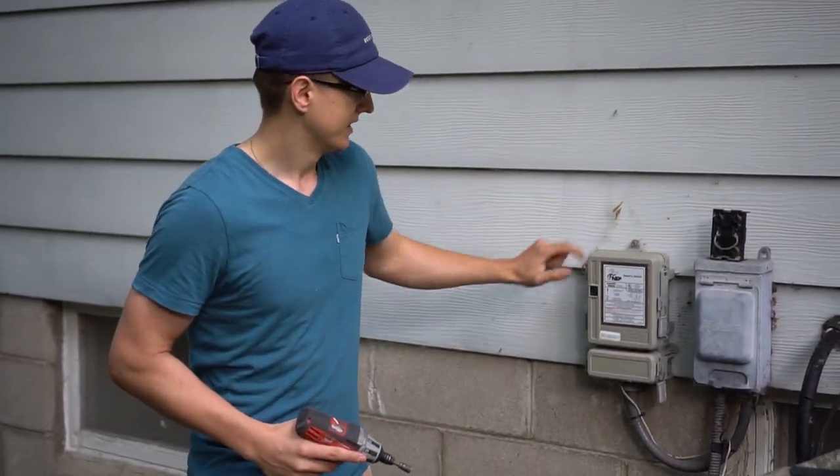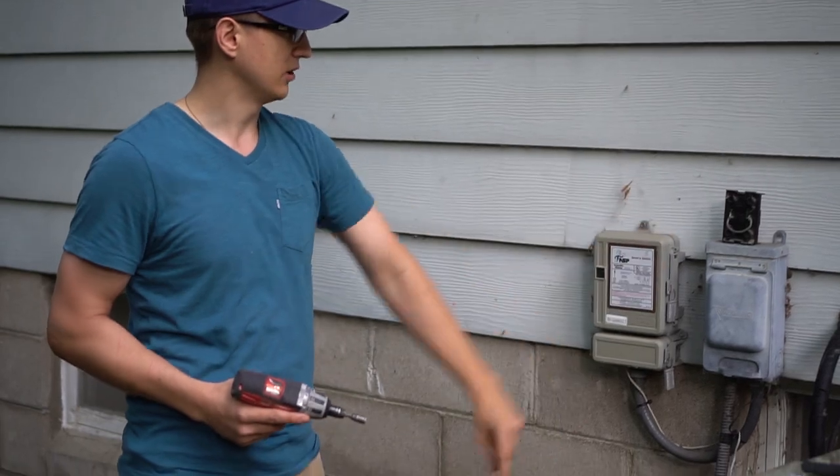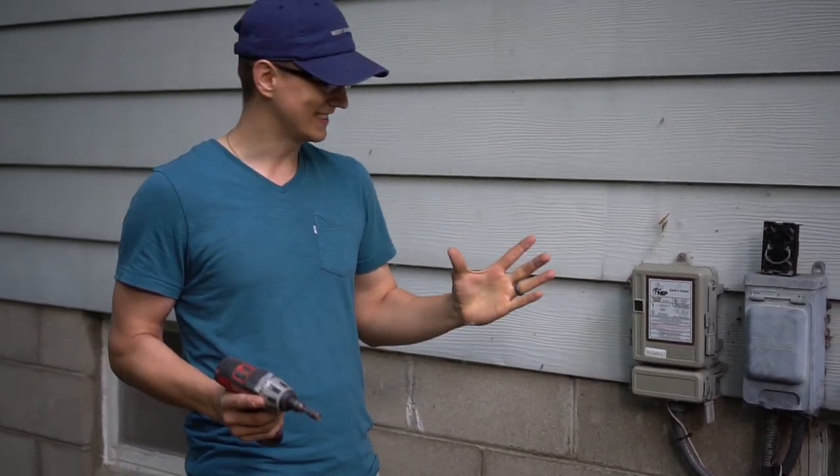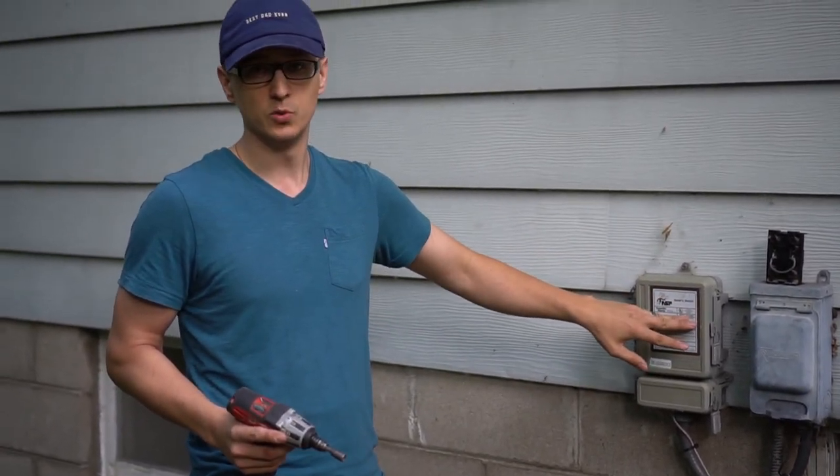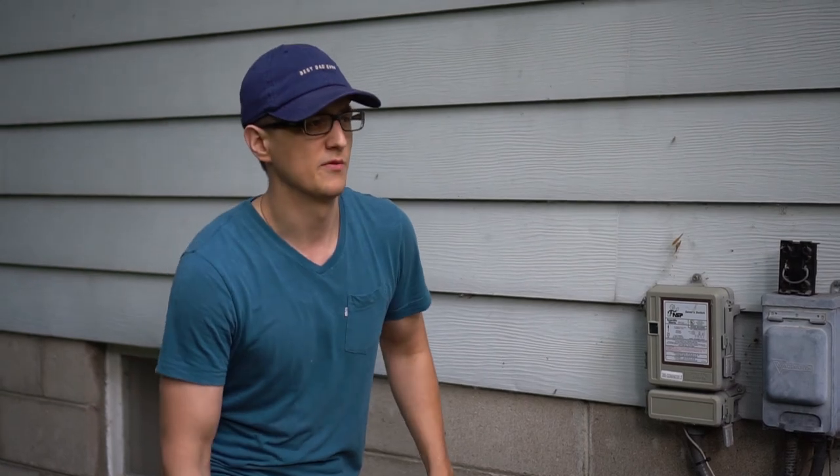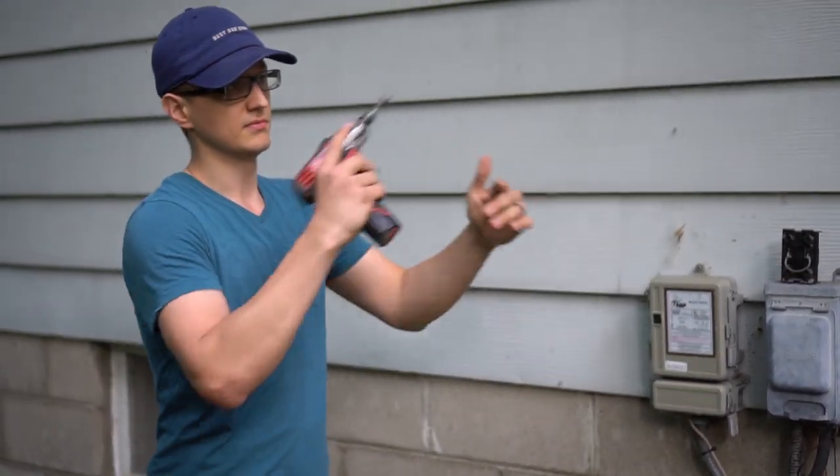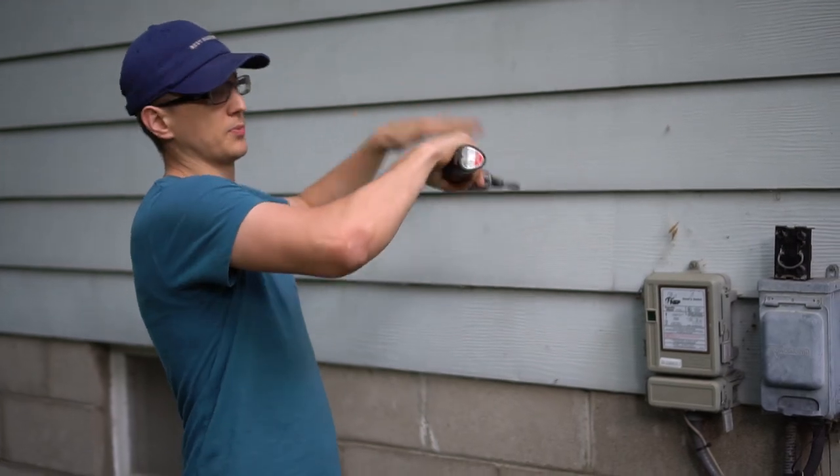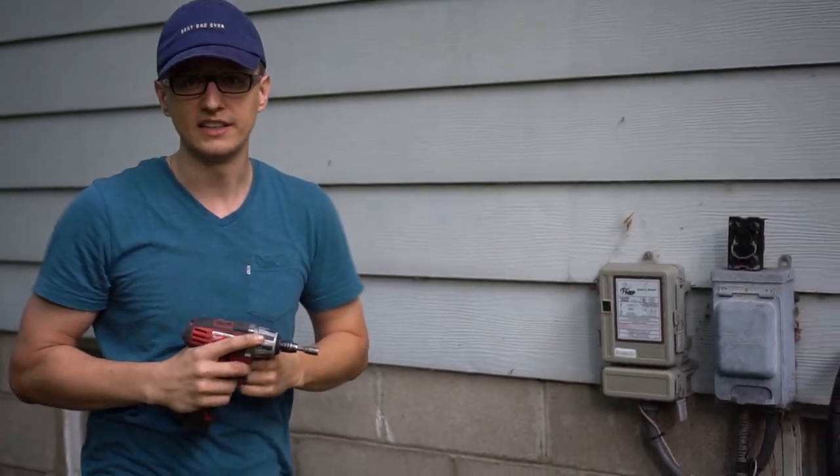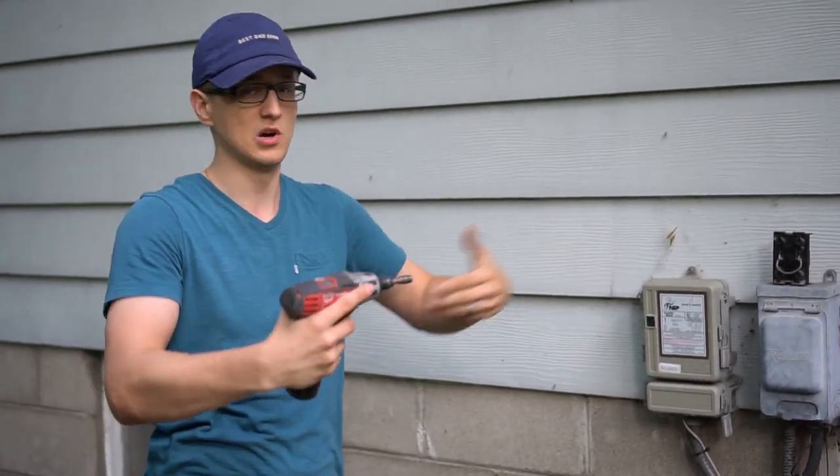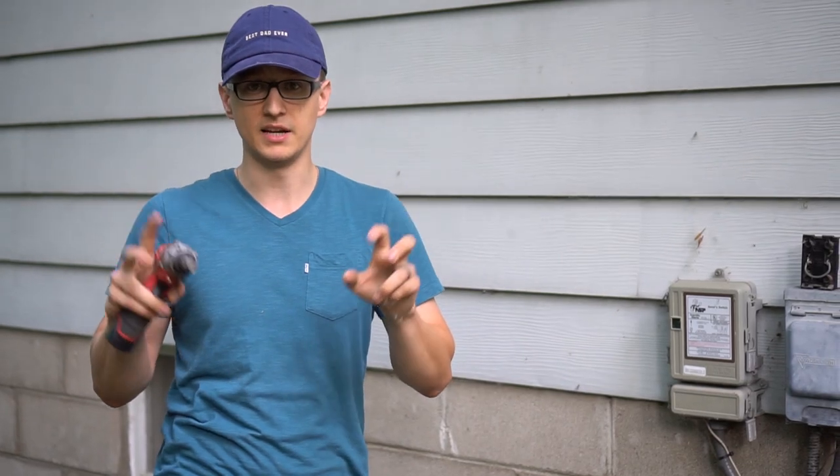So what this thing does is it's from the power company. On really hot days, everybody's running their AC at the same time. This thing will cycle your power off for 15 or 30 minutes, 45 sometimes, and it'll cycle you and your neighbors sporadically so not everybody's running their AC at the same time, not to overwhelm the electric grid. That's the idea behind it.